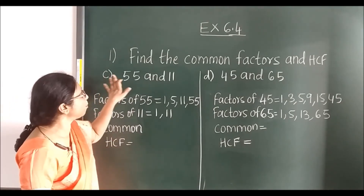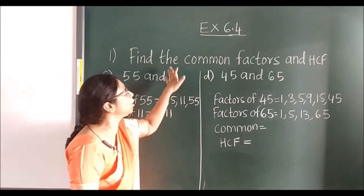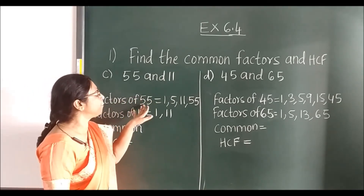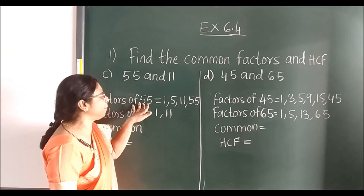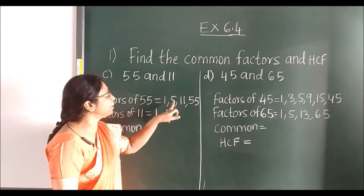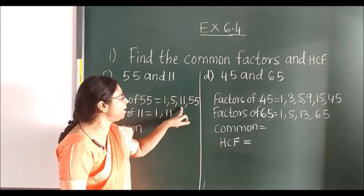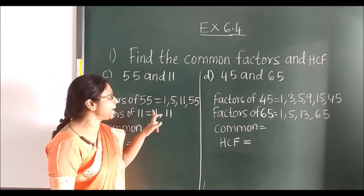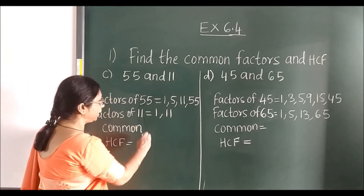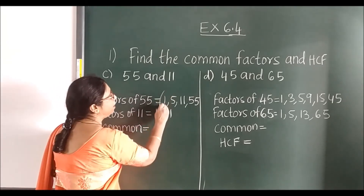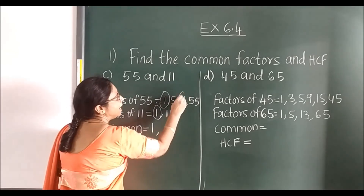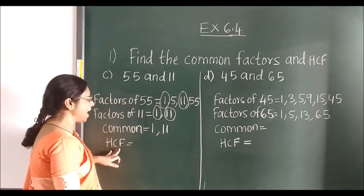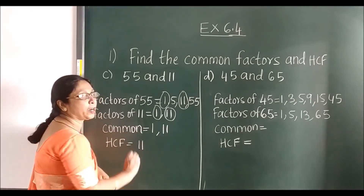Now 55 and 11. Factors of 55: it comes in 1, 5, 11, 55. Factors of 11: 1 and 11. Common factors are 1 and 11. The highest is 11, so HCF is 11.